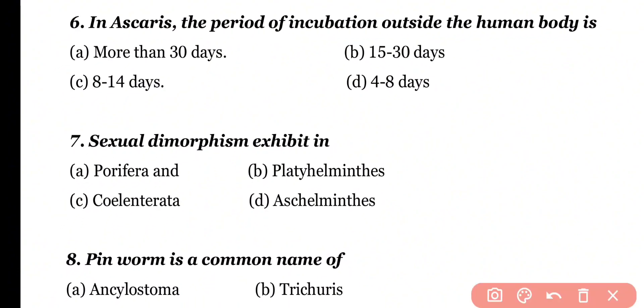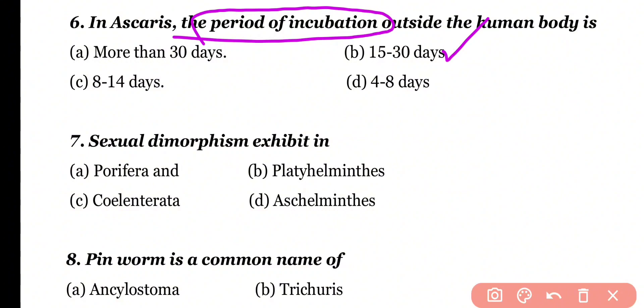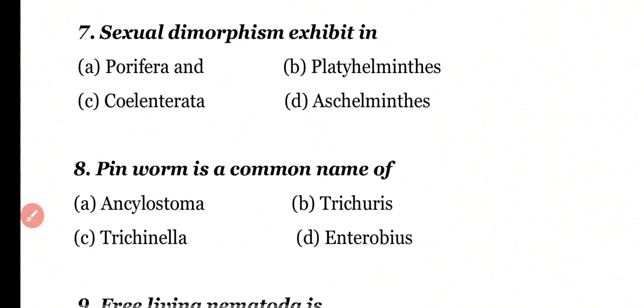Question 6: In Ascaris, the period of incubation outside the human body is more than 30 days, 15 to 30 days, 8 to 14 days, or 4 to 8 days. Correct answer is option B. 15 to 30 days is the period of incubation of Ascaris outside the human body.